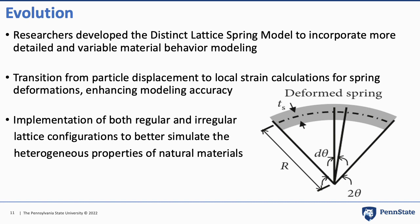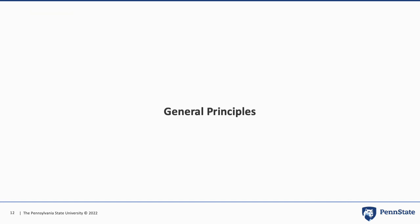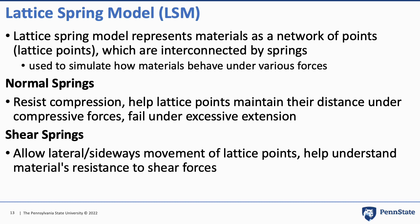Going from Heinrichov's LSM to the modern-day DLSM, a key transition was from particle displacement to local strain calculations for spring deformations, which enhanced model accuracy. Implementation of both regular and irregular lattice configurations allowed better simulation of heterogeneous properties of natural materials. The general principle is that materials are represented as a network of lattice points interconnected by springs, utilized to simulate how materials behave under various forces. There are two types: normal springs, which resist compression and fail under excessive extension, and shear springs.